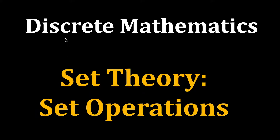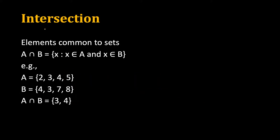In this video we are going to see what are the different operations that we can perform on a set. The first operation is intersection, which means we have to find the elements that are common to both sets, denoted with the intersection symbol. So A intersection B means all elements X such that X belongs to A and X belongs to B — it should belong to both sets A and B.